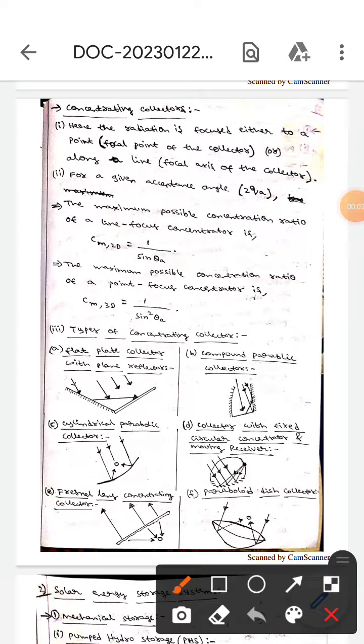Hello guys, I hope you're all fine. Today we are here to discuss concentrating collectors. Here, the radiation is focused either to a point or along a line. This point is known as the focal point of the collector, or this line is known as the focal axis of the collector.